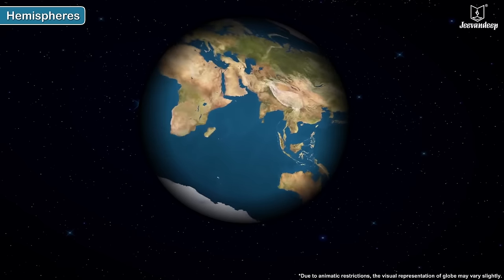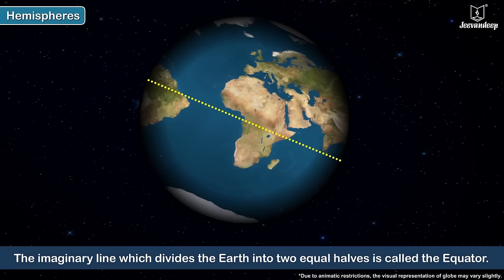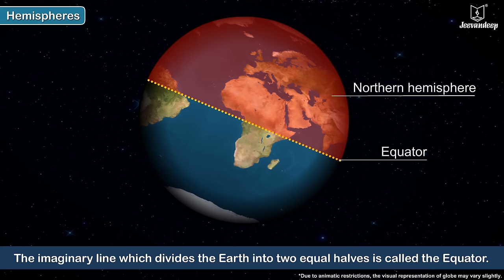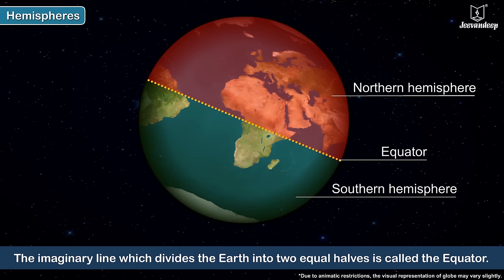Hemispheres. The imaginary line which divides the Earth into two equal halves is called the equator. The area lying above the equator is called the northern hemisphere and the one lying below it is called the southern hemisphere.